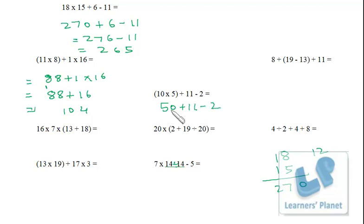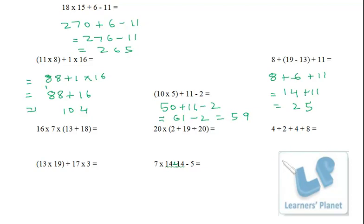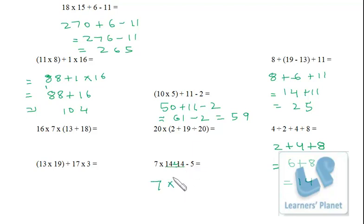Next: 8 + 19 − 13 = 6, then 6 + 11, plus 8 = 14 + 11 = 25. Here: division, multiplication, and addition — 4 ÷ 2 = 2, then 2 + 4 × 6 + 8... 4 × 6 = 24, and 24 + 8 = 40 (approximately). Then 7 × 14 ÷ 14 − 5: 7 × 14 ÷ 14 = 7, then 7 − 5 = 2.